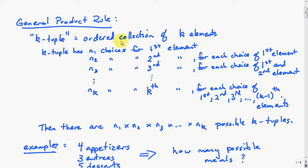We'll define a k-tuple as an ordered collection of k elements. A k-tuple has n1 choices for the first element, n2 choices for the second element for every choice of the first element, and so on, up to nk choices for the kth element for every choice of all previous elements. Then there are n1 times n2 times n3 up to nk possible k-tuples.